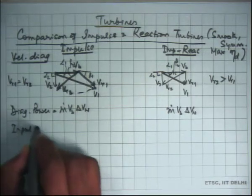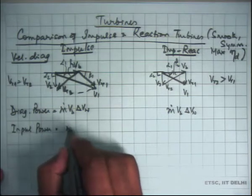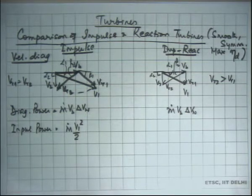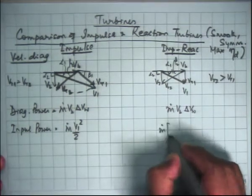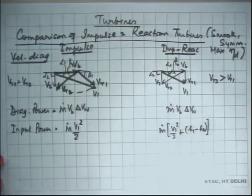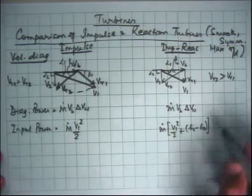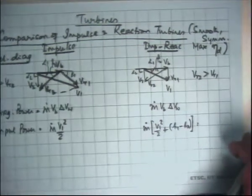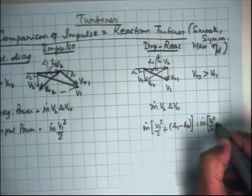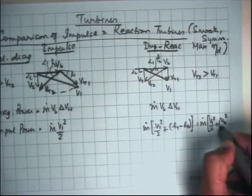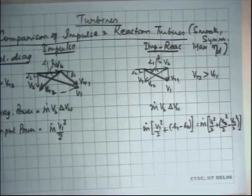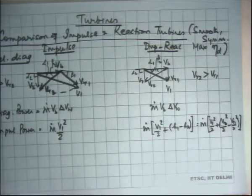Input power is m-dot times V1 squared over 2. In the case of the impulse turbine, it is only the kinetic energy of the incoming flow. For the reaction turbine, it is m-dot multiplied by V1 squared over 2 plus (H1 minus H2), where H1 minus H2 is the enthalpy drop across the rotor. This can be written in terms of the relative kinetic energy change: m-dot times V1 squared over 2 plus (Vr2 squared over 2 minus Vr1 squared over 2). This can be verified by applying the first law to the rotating row.